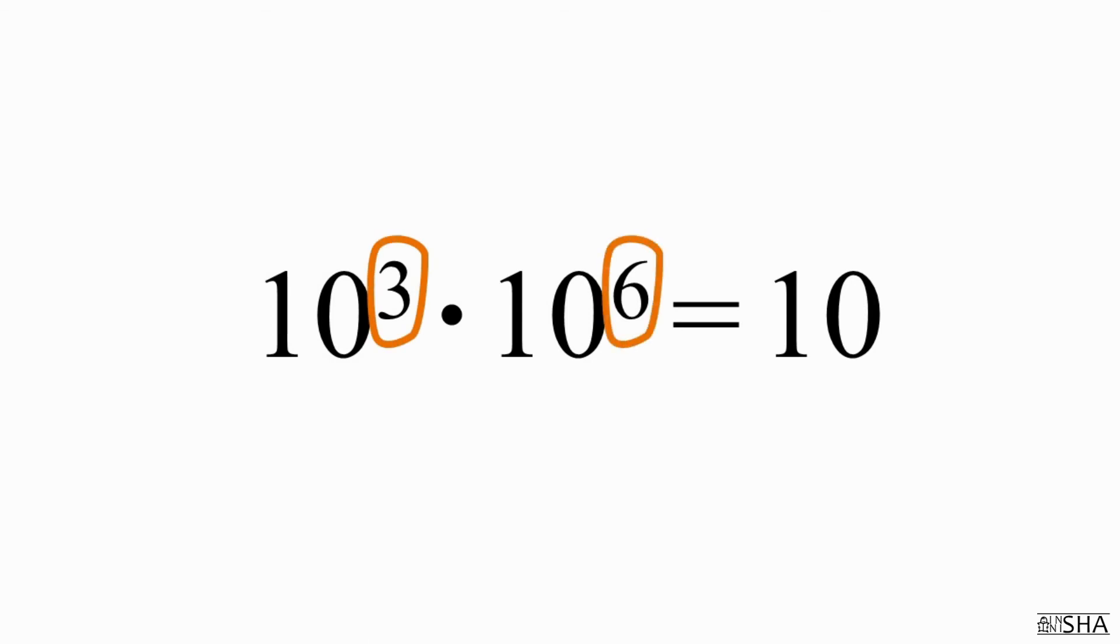Ten to the third power, times ten to the sixth power. We simply write down the base which is ten. And we add the powers. Three plus six equals nine. The answer is ten to the ninth power.